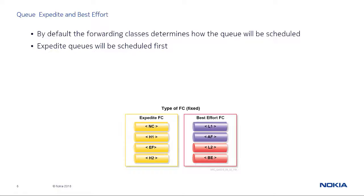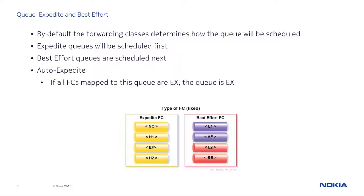Packets in expedited queues are serviced before packets in best effort queues. The administrator can statically configure a queue as best effort or expedited, or configure it dynamically as auto-expedite, which is the default. An auto-expedite queue will be an expedited queue as long as no best effort forwarding class is mapped to it. If at least one best effort forwarding class is mapped to the same queue, the queue will then become a best effort queue.